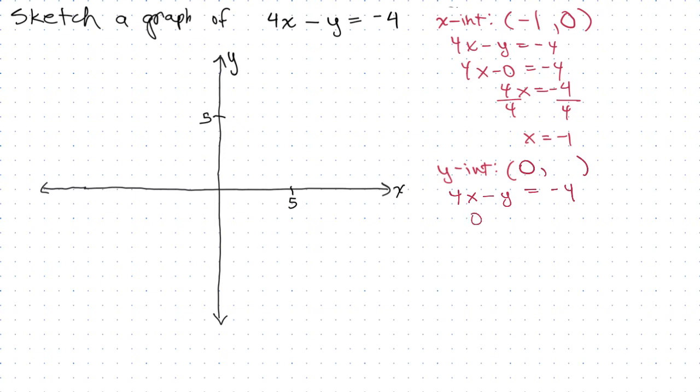So 4 times 0 is 0, minus y is -4. If you want, you can write 4 times 0, but that's 0 minus y. So that's -1y = -4. Divide by -1, you get y is 4.